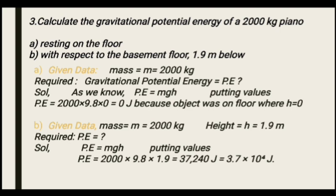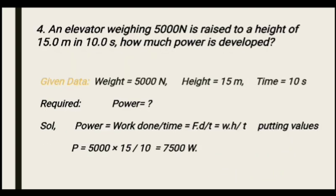The result is approximately 37,240 joules, written in scientific notation as 3.724 × 10 to the power 4 joules. Next numerical: an elevator weighing 5000 Newton is raised to a height of 15 meters in 10 seconds. How much power is developed? Given: weight 5000 N, height 15 m, time 10 s. Solution: Power equals work divided by time, where work equals F × d. So power equals 5000 × 15 divided by 10 equals 7500 watts.